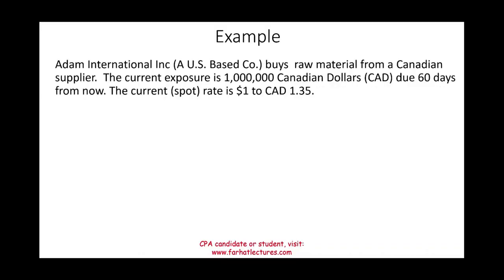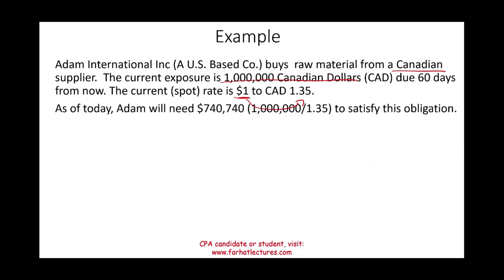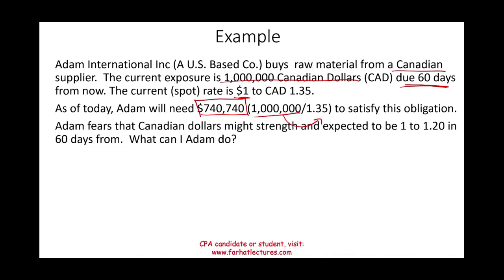Let's look at Adam, a U.S.-based international company that buys raw material from Canada. The current exposure is 1 million Canadian dollars due in 60 days. The current spot rate is 1 USD = 1.35 CAD, so as of today Adam would need $740,740 (1,000,000 ÷ 1.35) to satisfy this obligation. Adam doesn't have this money right now and it's not due for 60 days, so a lot could happen.